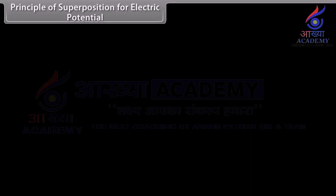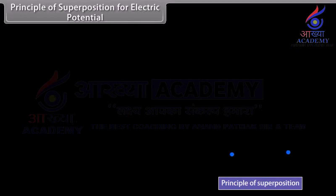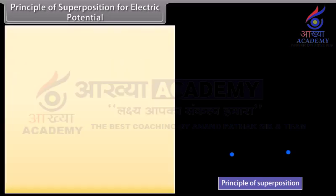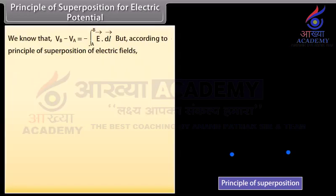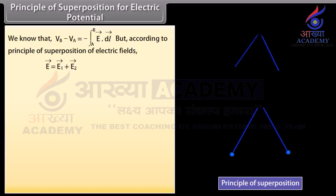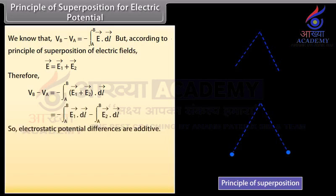Principle of superposition for electric potential: Consider two point charges plus Q₁ and plus Q₂. Take any two points A and B in the combined electrostatic field of the two charges. Choose a curve L between A and B. We know that V_B minus V_A equals minus the integral from A to B of E vector dot dL vector. But according to the principle of superposition, E vector equals E₁ vector plus E₂ vector. Therefore, V_B minus V_A equals minus the integral from A to B of (E₁ + E₂) dot dL. So, electrostatic potential differences are additive.